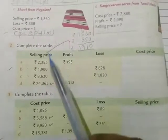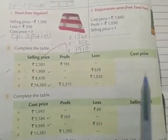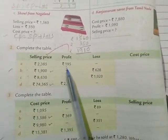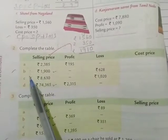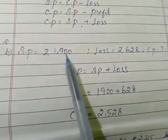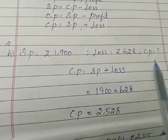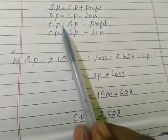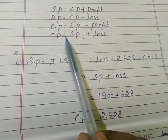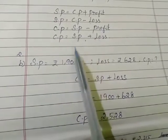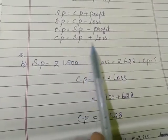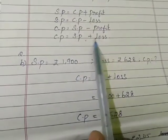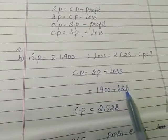The remaining two sums are homework. Now going to solve the second sum — complete the table. Two cases are given and we need to find the third. Selling price and profit are given in some rows, and loss in others. If you know any two values, you can find the third. For part B: selling price rupees 1900, loss rupees 628, find cost price. Since selling price with loss is given, we use the formula cost price equals selling price plus loss. Add the values to get cost price.